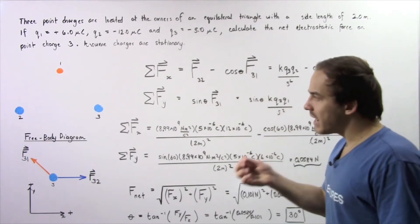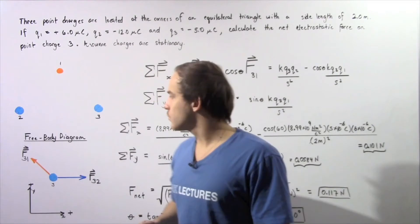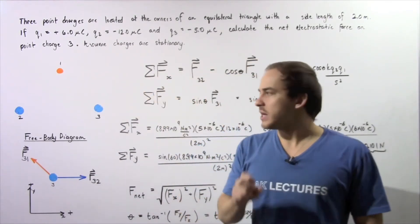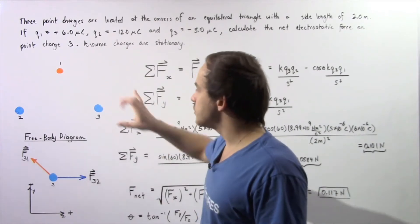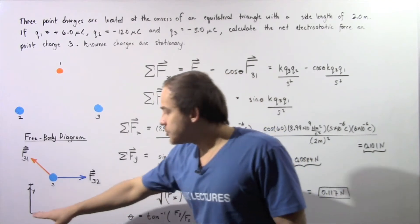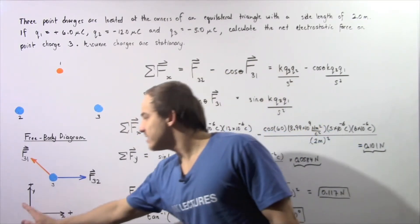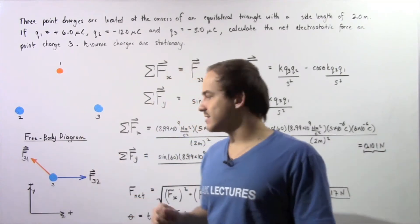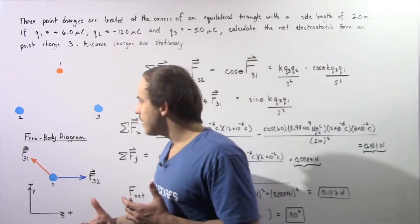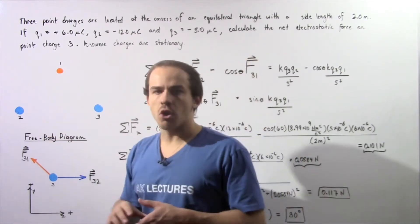We begin by examining the free body diagram — the force diagram of point charge number three. We're going to have two forces acting on point charge three because we have two other point charges. We choose going to the right along the x-axis to be positive and going up along the y-axis to be positive. Let's begin by examining the force acting on point charge three as a result of point charge two.